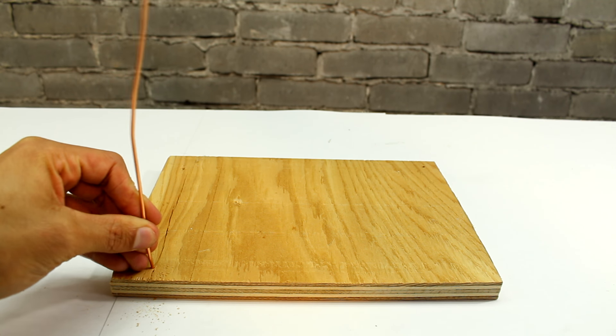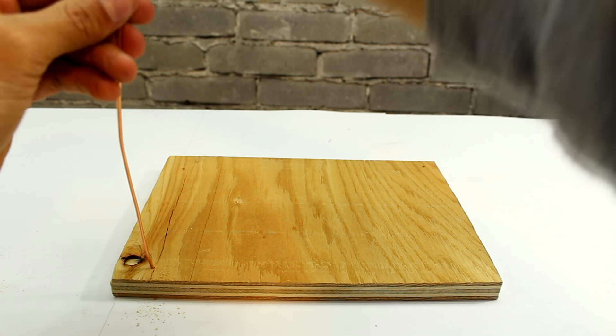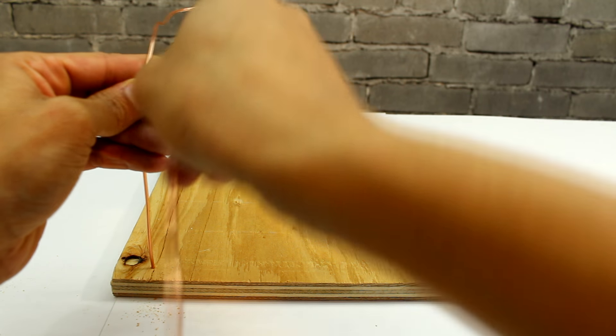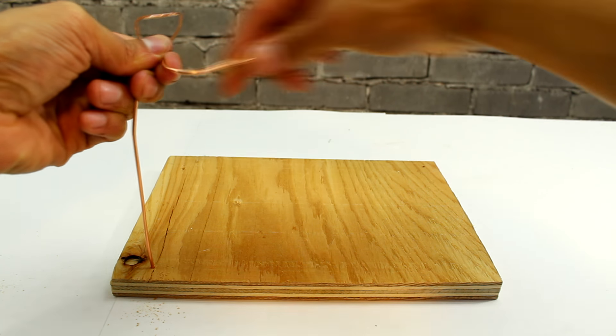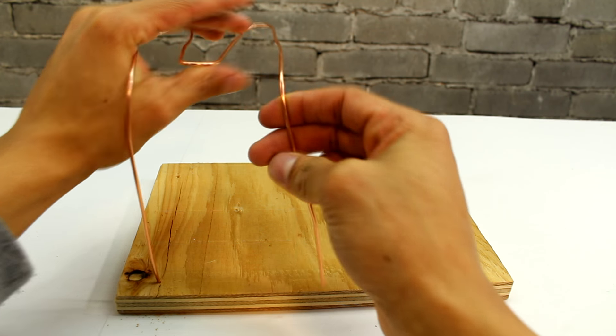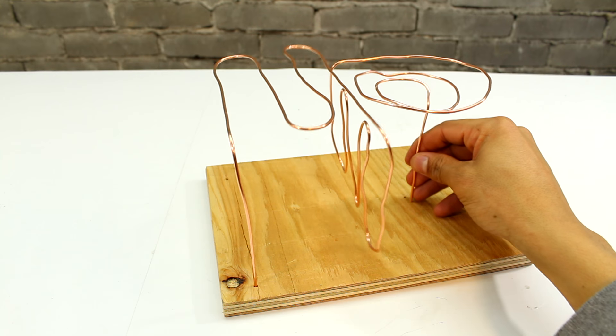Now we can go ahead and bend this copper wire however we like for our game. The closer the bends are, the more difficult the game is going to be. I actually found my game very difficult to complete without hitting the side, so you might want to make it a little more simple than this. But this is the final product that I come out with.